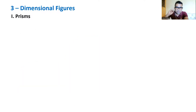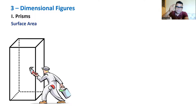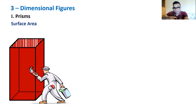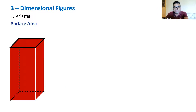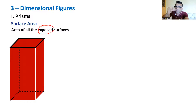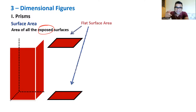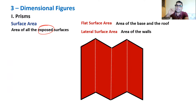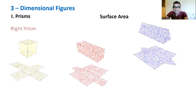Now let's go ahead with surface area. Visualize painting — which surface do you paint? All the exposed outer surfaces. Surface area is the area of all exposed surfaces. These have two components: the flat surface area (area of the base and top) and the lateral surface area (area of the walls). These two together make the total surface area.